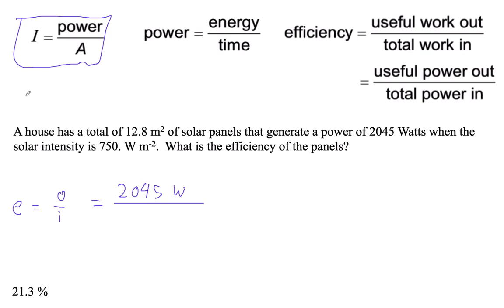Okay, we're going to say that our power is intensity times area. So that's going to be 750. That's watts per square meter.